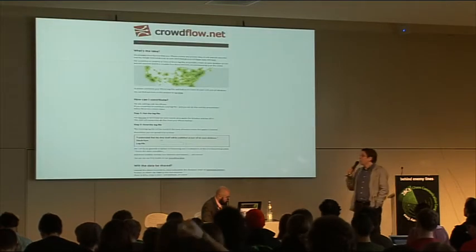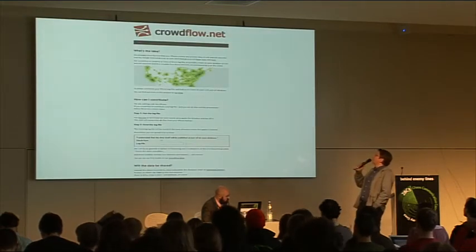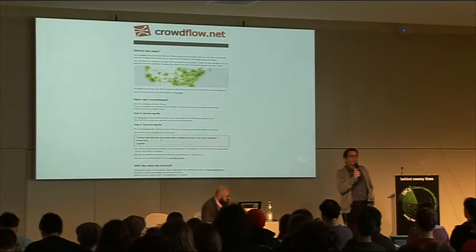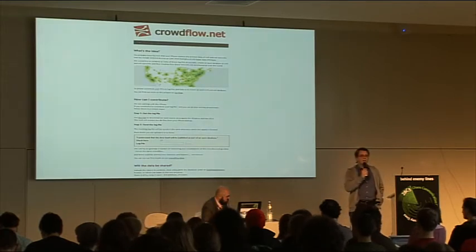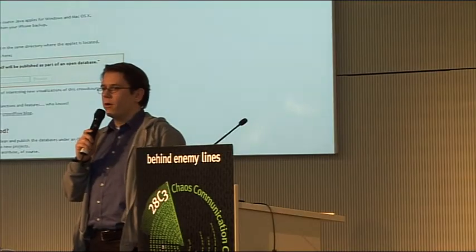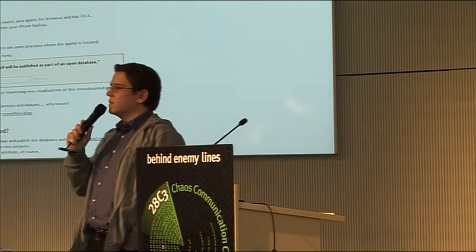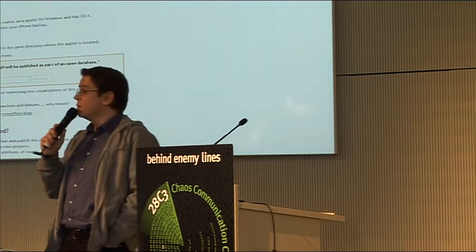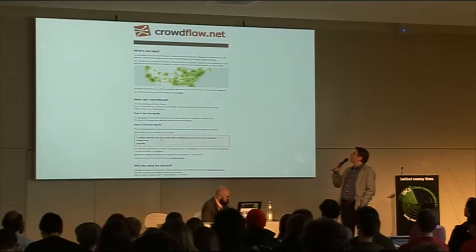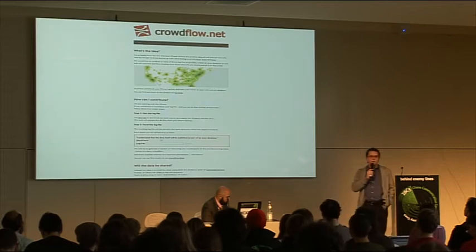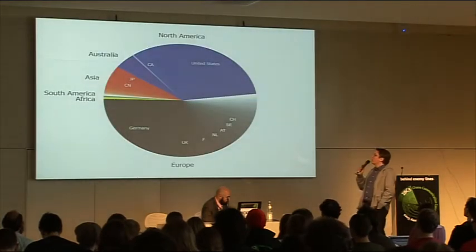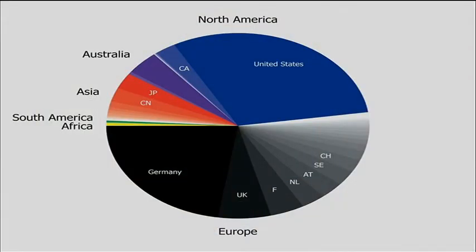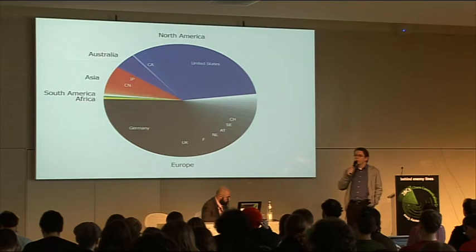So we started this project crowdflow.net. It's basically a Java app that can extract the location data from your iPhone and you can see it yourself as a simple CSV file, but you can also upload it to us. Currently we've collected 1500 data donations and we made some analysis and visualizations out of that. The first one is: where does all this stuff come from? Mostly it's from Europe, a big part from the United States. Of course Germany is pretty big because it started here in Berlin.